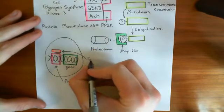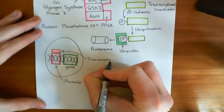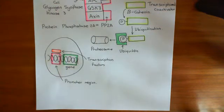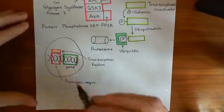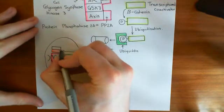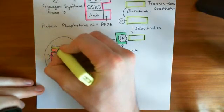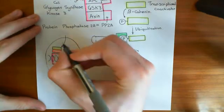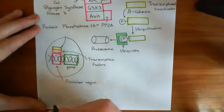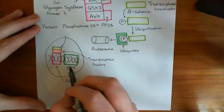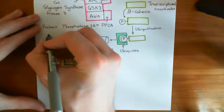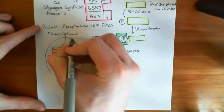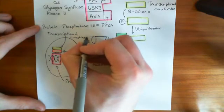Transcription factors thereby alter the expression of certain genes within the cell and can cause a lot of downstream effects. A transcriptional co-activator, which is what beta-catenin is, binds to a transcription factor and alters which promoter regions the transcription factor is going to bind to. It can also alter how that transcription factor affects those promoter regions — whether it promotes or represses gene expression. Transcriptional co-activators, without the transcription factor, cannot bind to the DNA themselves.